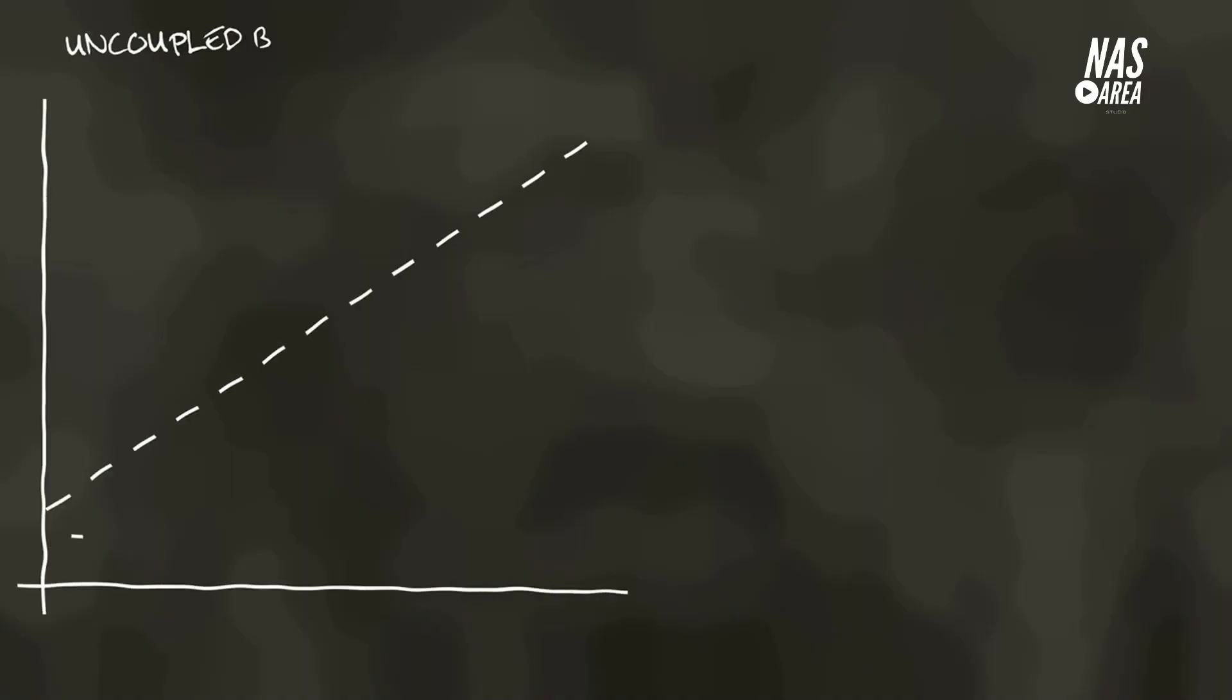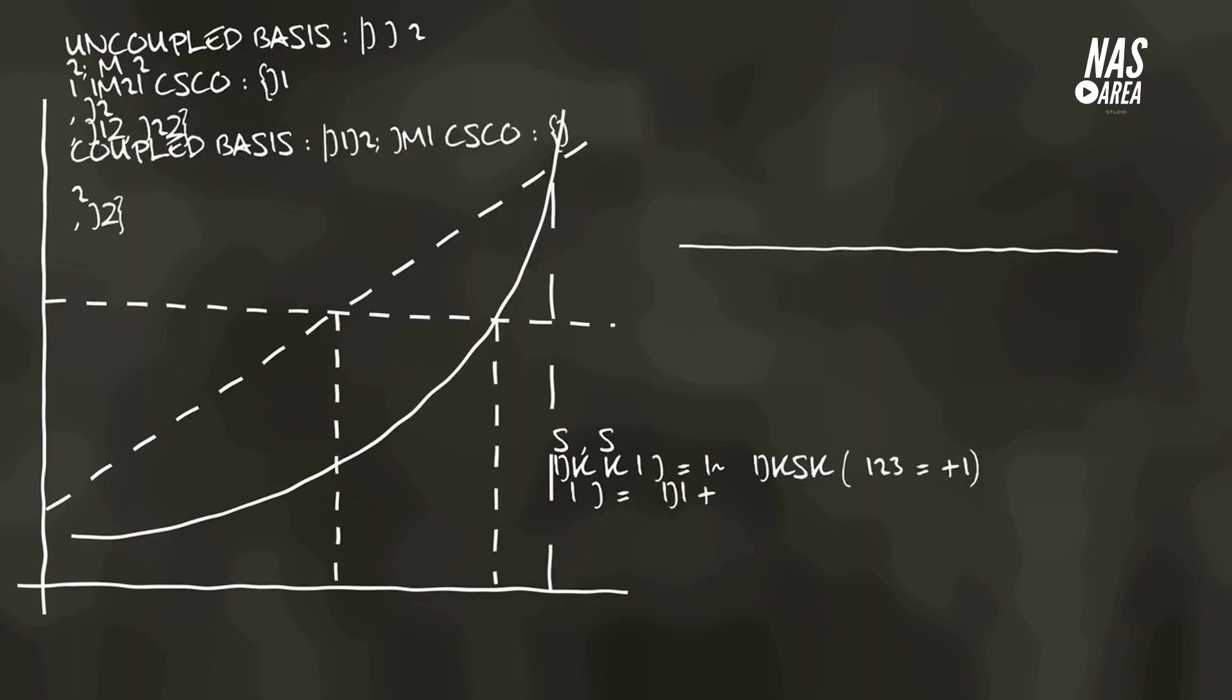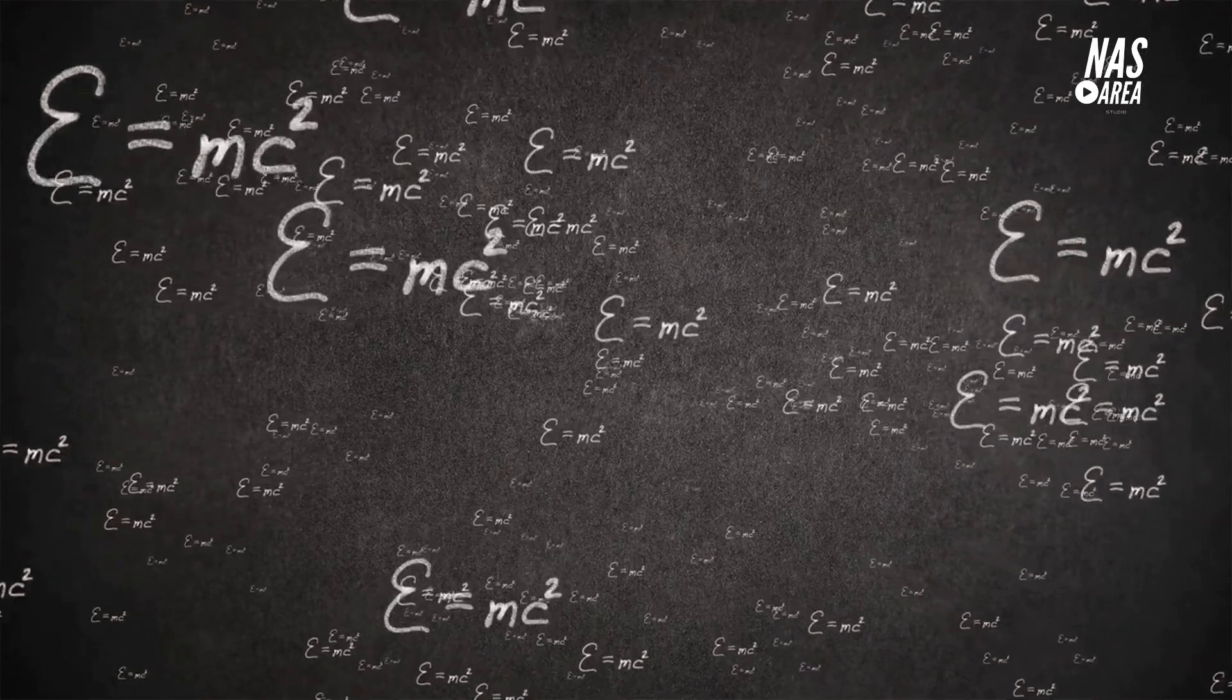The Theory of Relativity is one of the most groundbreaking and influential scientific theories in history. Developed by Albert Einstein, it revolutionized our understanding of space, time, and gravity. But what exactly is the Theory of Relativity, and how does it work?